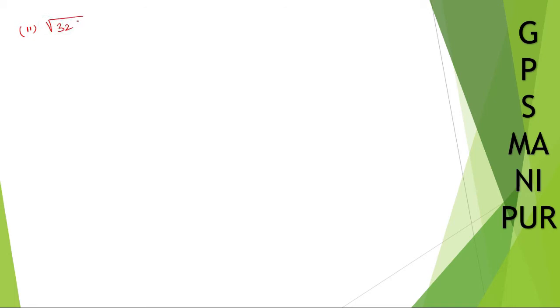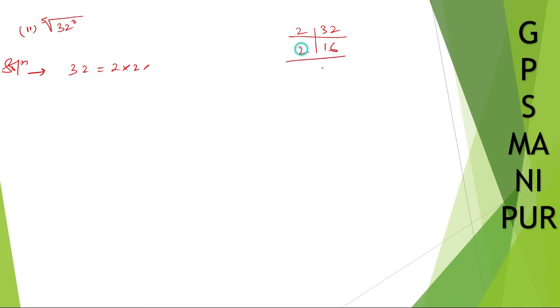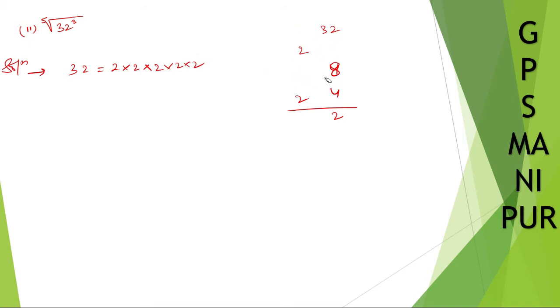Now let us do roman number 2: find the value of the fifth root of 32 cubed. Solution: 32 can be written as 2 into 2 into 2 into 2 into 2 — that is five 2s, so 32 equals 2 to the power 5.